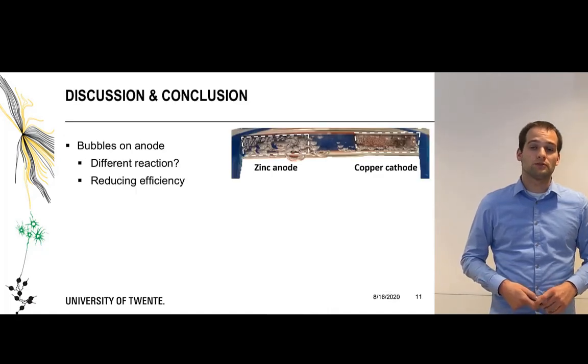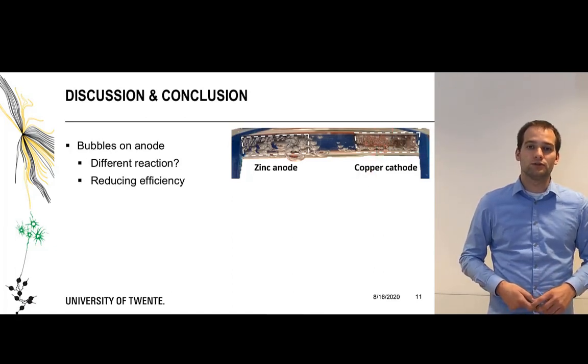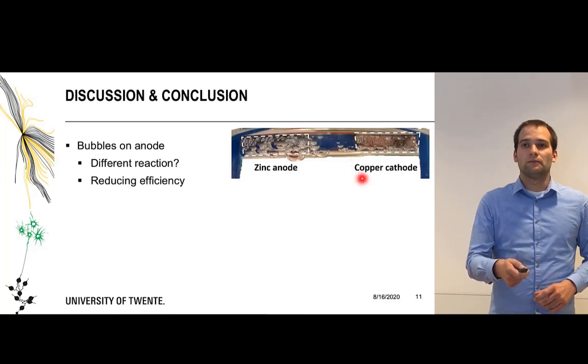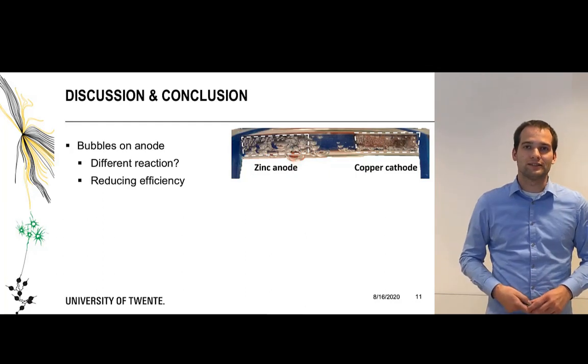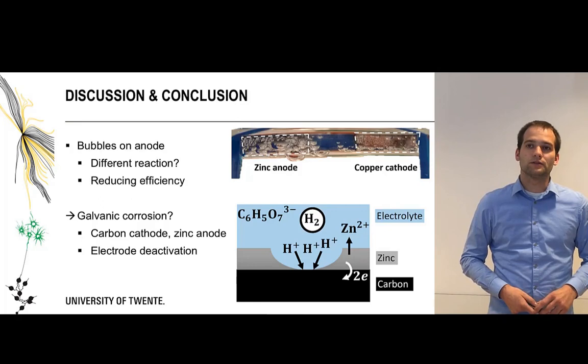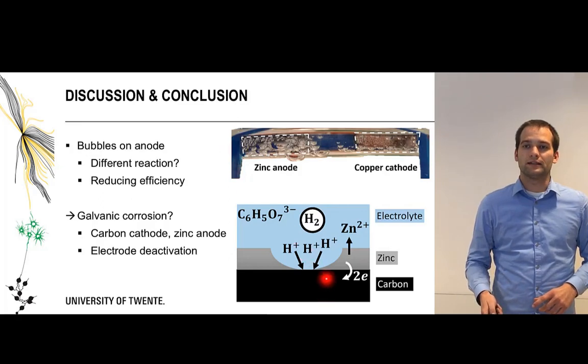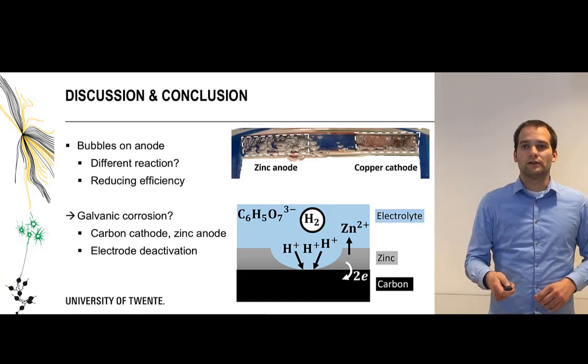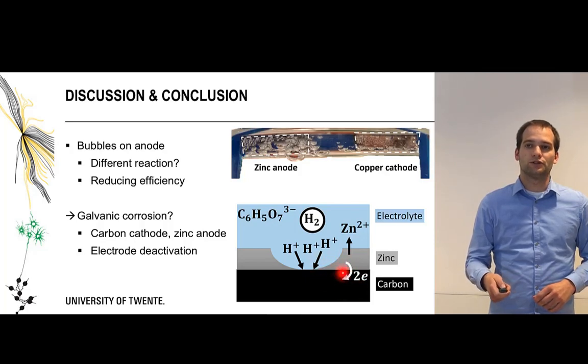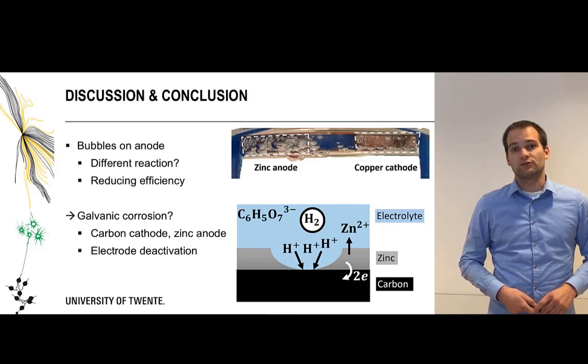This might be due to bubbles on the anode. During the reaction it's standard to have bubbles on your copper cathode because that's where the hydrogen reduces and oxidizes, but the bubbles on the zinc anode might indicate a different reaction taking place which could reduce the efficiency of the battery. Our current belief is that this happens through galvanic corrosion where the carbon underneath the zinc layer actually acts as cathode due to the difference in working potential with the zinc, so the zinc reduces and reaction takes place which causes electrodeactivation.